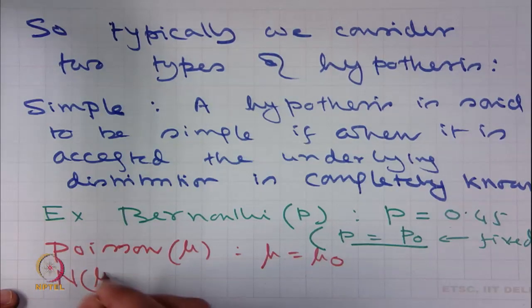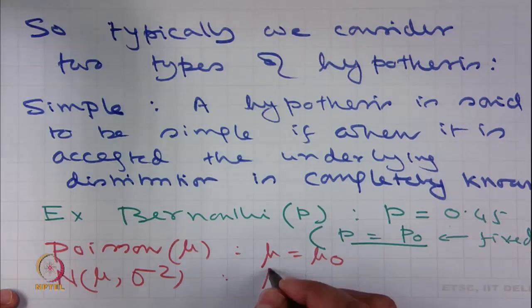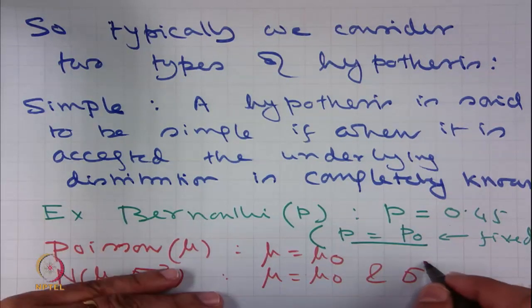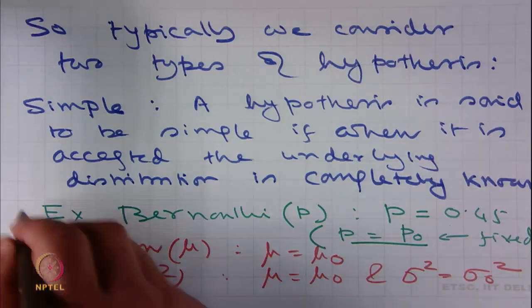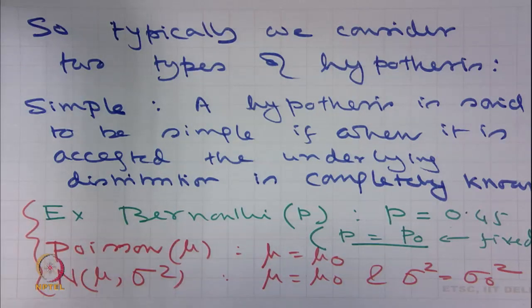When looking at Normal(mu, sigma²), a hypothesis like mu = mu₀ and sigma² = sigma₀² specifies both parameters. These are all simple hypotheses, so that if the hypothesis is accepted then we know the distribution completely.